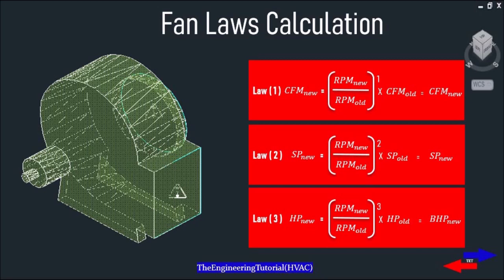The fan laws allow that the speed and airflow vary directly — any change to RPM results in a proportional change to CFM. Therefore, if we increase the speed of the fan by 10%, we get a 10% increase in airflow and RPM. There are three fan laws covering various system properties. Fan Law 1: CFM new equals (RPM new divided by RPM old) multiplied by CFM old, which gives us CFM new.